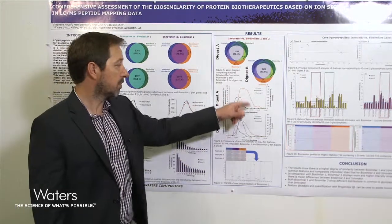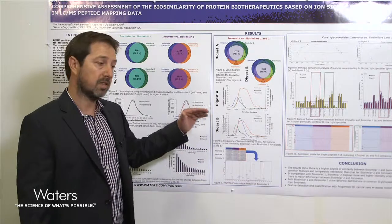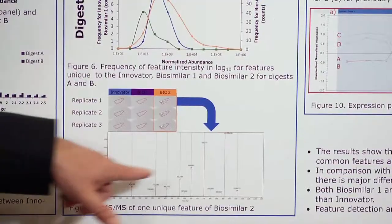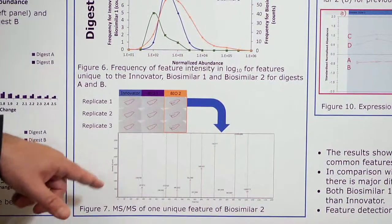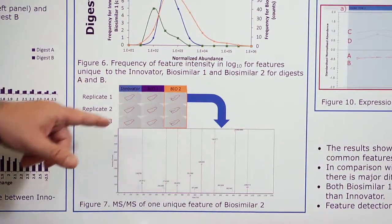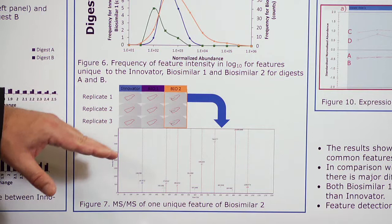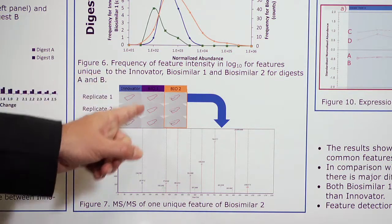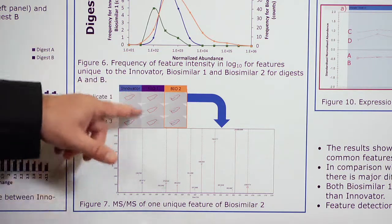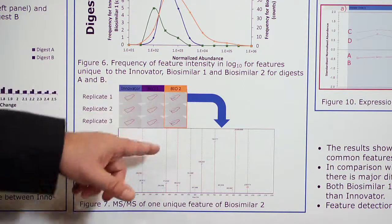We took some of those features and performed targeted DDA to get MSMS spectra, as a sanity check to confirm those were peptides. We were able to identify one of the peptides, and if you look at the visualization from Progenesis QI — replicate one, replicate two, and replicate three for the innovator, biosimilar one, and biosimilar two — you can see that feature is unique to biosimilar two and is present in each replicate.